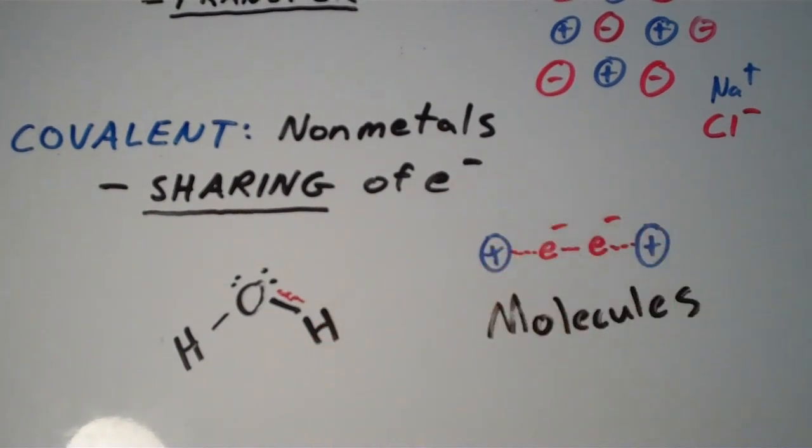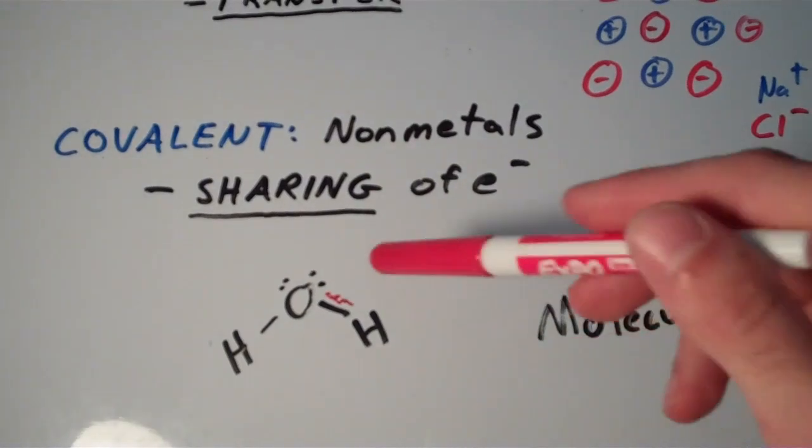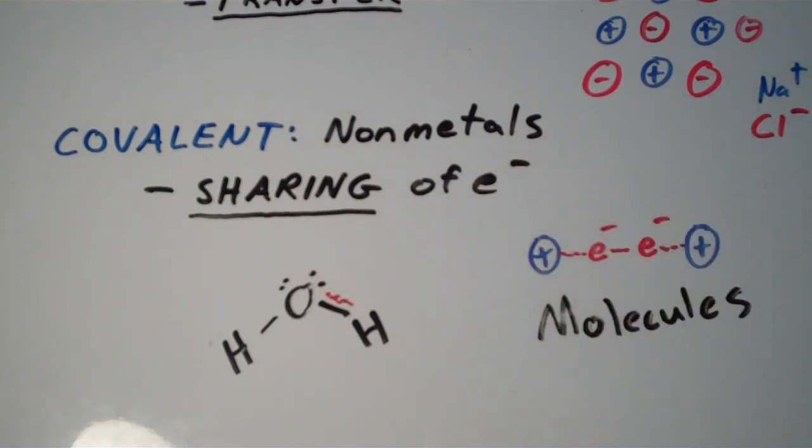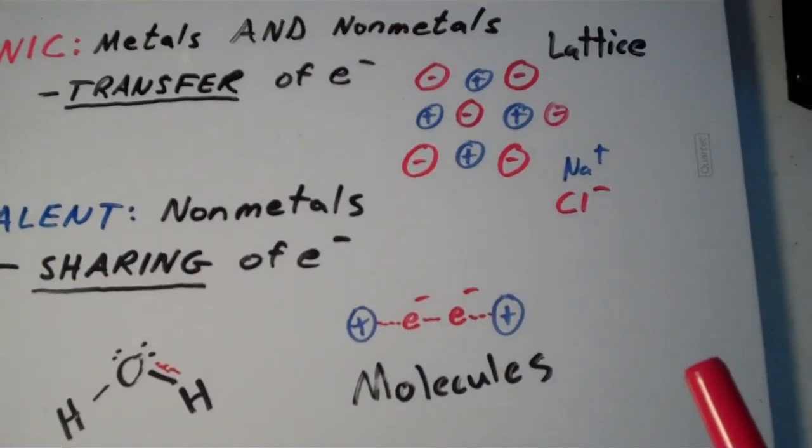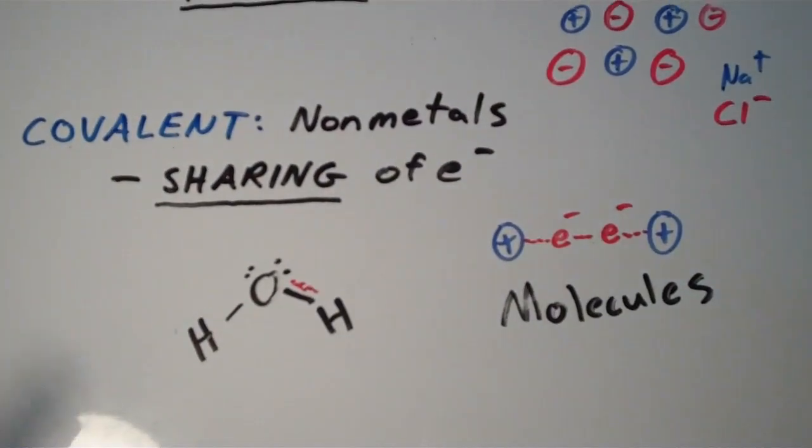So notice that when we're talking about covalent bonding between oxygen and hydrogen, this doesn't go on in a repeating lattice like the sodium chloride structure did. Instead, this has these discrete little molecules.